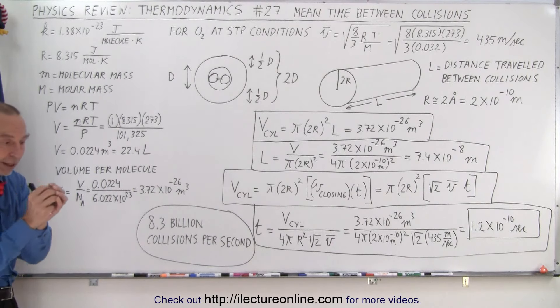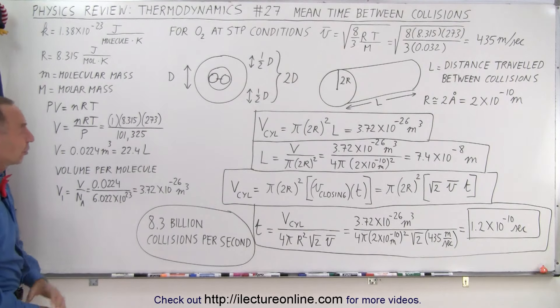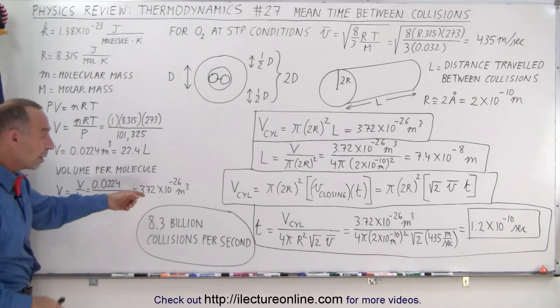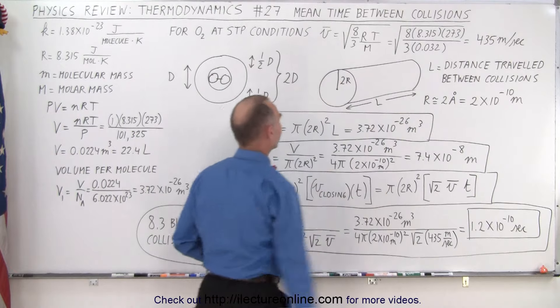That's the volume occupied by a single molecule. Of course, that's not the volume of the molecule. It's the volume of the molecule plus the empty space around it on average. And so that volume of the molecule plus the empty space around it, that then is the same as the volume of the cylinder.